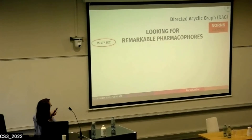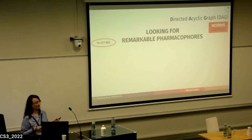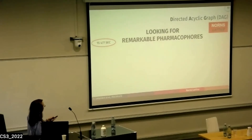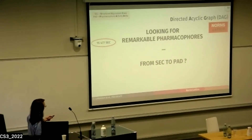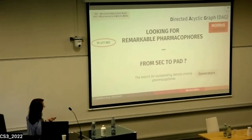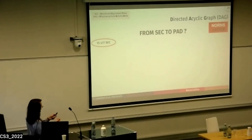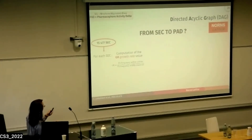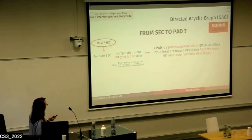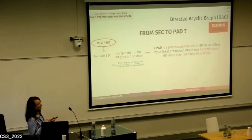At this level we still had 15,000 pharmacophores to work with — too many to study manually. We wanted to identify remarkable pharmacophores, which we called PAD — Pharmacophore Activity Delta — searching for outstanding details among generators. For each pharmacophore in the 15,000 set, we computed the growth rate and defined a PAD as a pharmacophore whose growth rate value differed by at least two times the standard deviation.